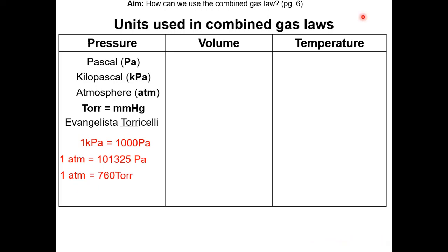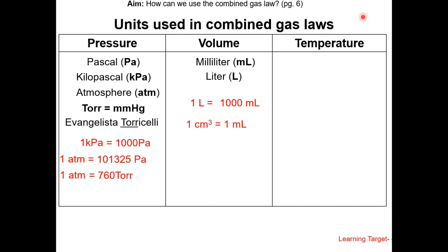The units for volume are milliliter and liter. 1 liter is equal to 1000 milliliters. 1 cm cubed is equal to 1 milliliter.